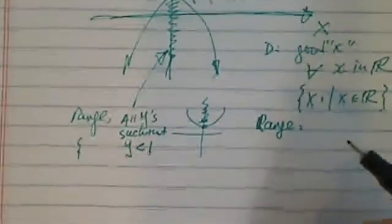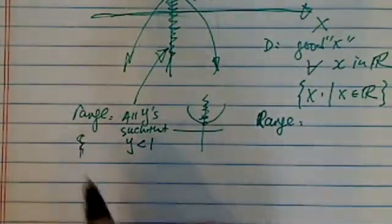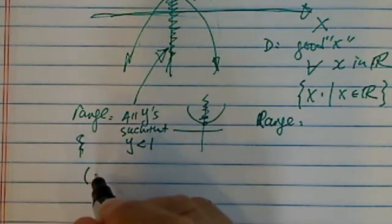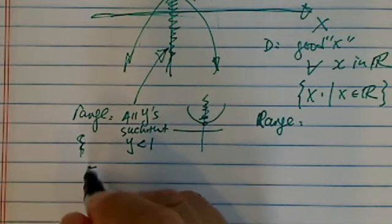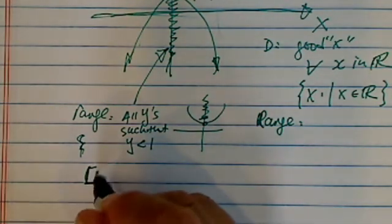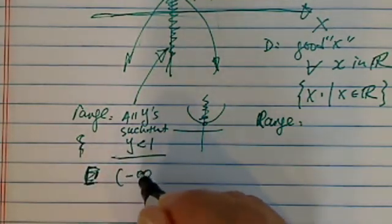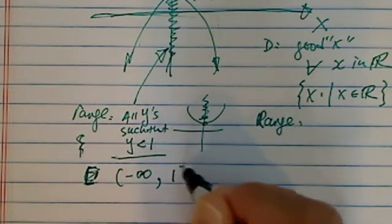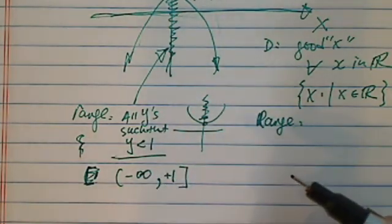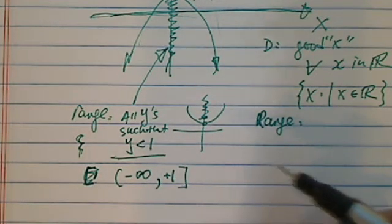Okay, so in set notation or interval notation, we would say y has to be, you can equal to 1, less than 1. So, minus infinity, okay, all the way to positive 1. Okay, that's the interval notation.